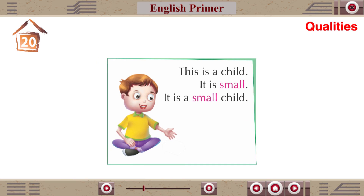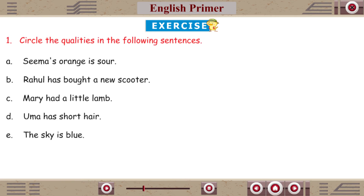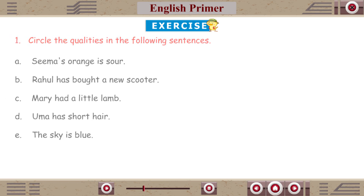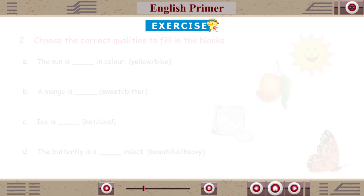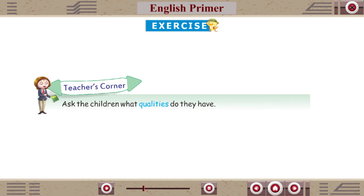This is a child. It is small. It is a small child. Exercise 1: Circle the qualities in the following sentences. Exercise 2: Choose the correct qualities to fill in the blanks. Teacher's Corner: Ask the children what qualities they have.